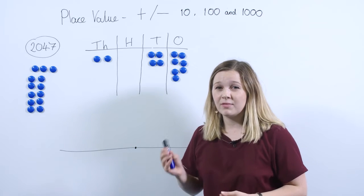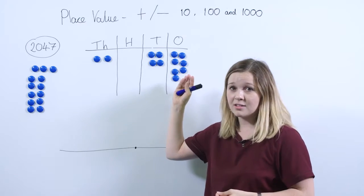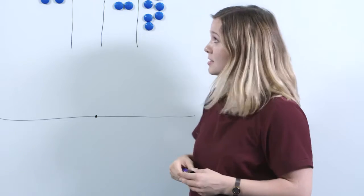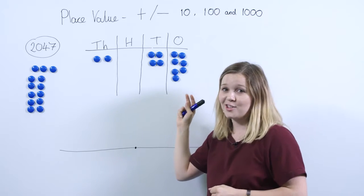When we're doing this, it's really important that your pupils understand the value of each digit, and that's why a place value chart like this is really useful. You can have it on a whiteboard or children can have their own at their desk.